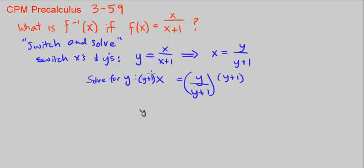What we're left with on the left is y plus 1 times x. Let's distribute x and write it like that. So we have x times y plus 1 times x, which is x, equals, and then these cancel out. So that's equal to y.